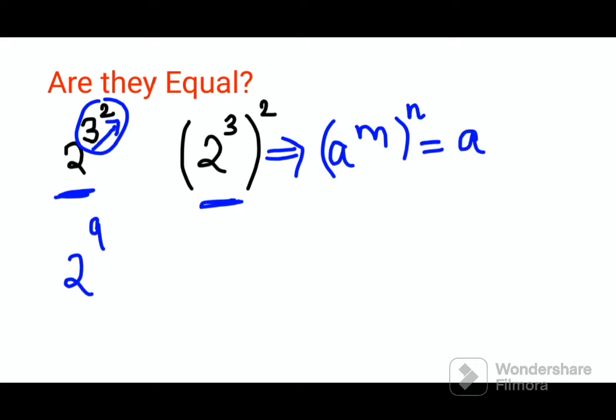So here you will have 2 raised to 3 times 2, which gives you 2 raised to 6. Therefore, 2 raised to 9 equals 512, and 2 raised to 6 equals 64. Obviously, the first one is greater, so they are not equal.